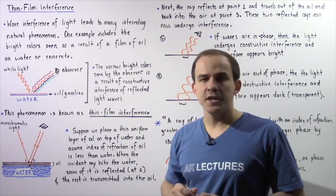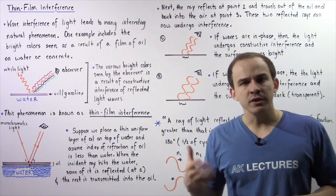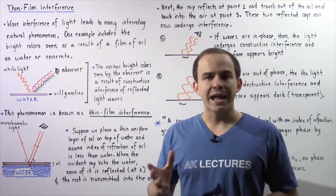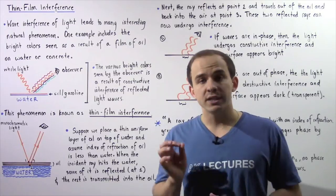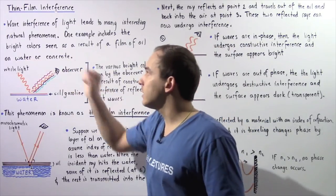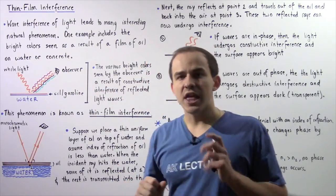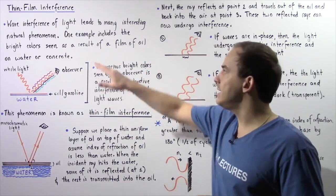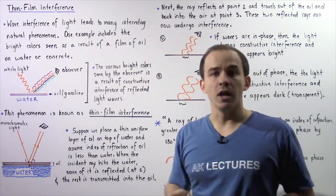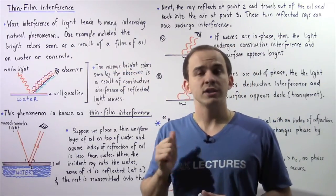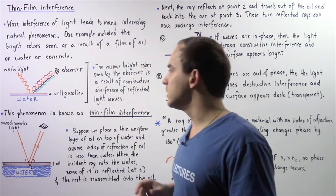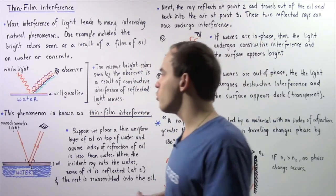Wave interference of light generally leads to many interesting natural phenomena, and one common example includes bright colors that are seen as a result of a film of oil on water or concrete. To see what we mean, let's look at the following diagram.